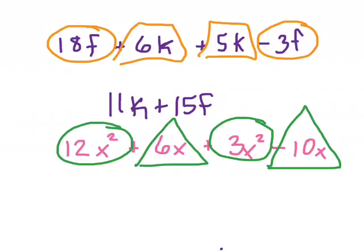So I can combine the ones that are like terms, but I can't combine an x squared with an x. So if I simplify this one, 12x squared and 3x squared is going to be 15x squareds, and 6x and negative 10x is going to be negative 4x's if I put them together, because 6 minus 10 is negative 4.